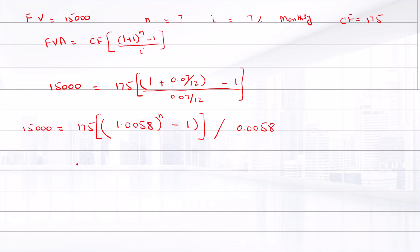Solving for n, we can get 1.0058 raised to power n equal to 1 plus 15,000 divided by 175, divided by 0.0058.